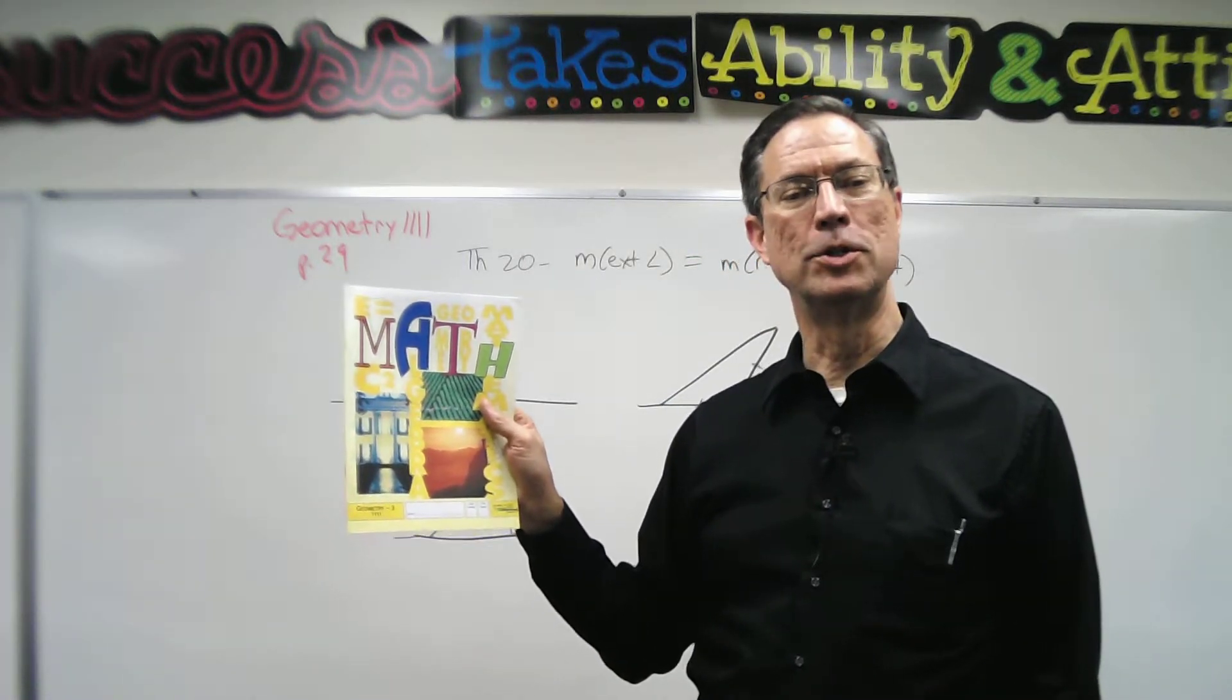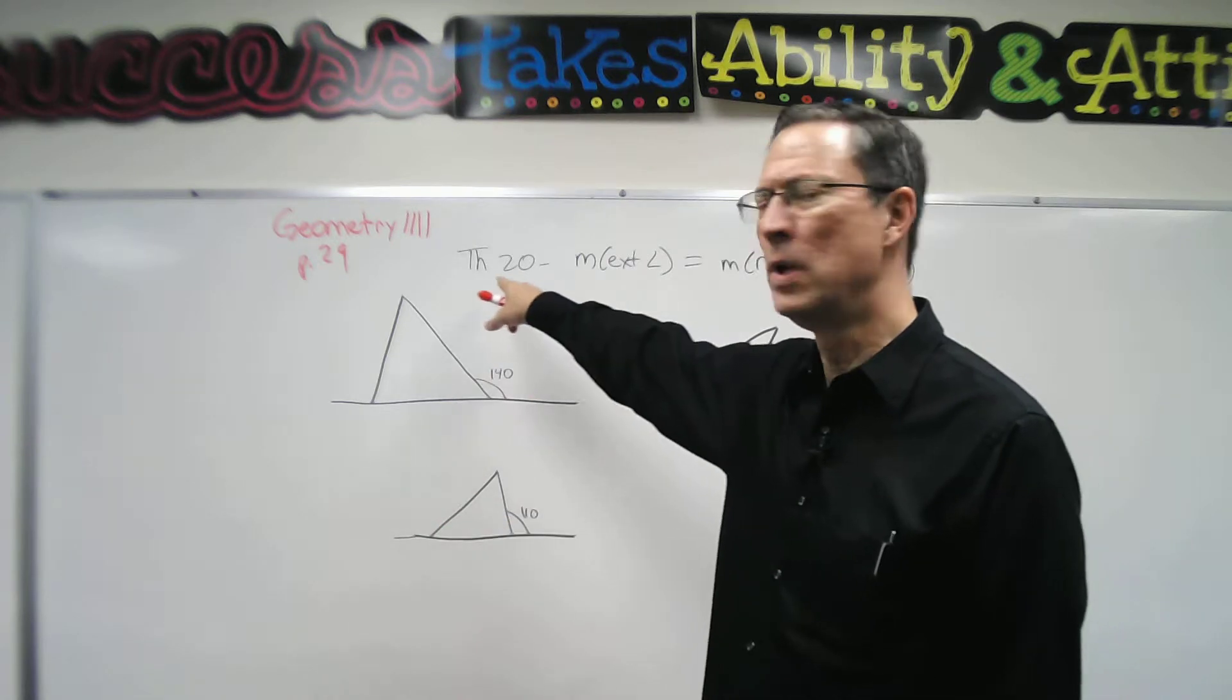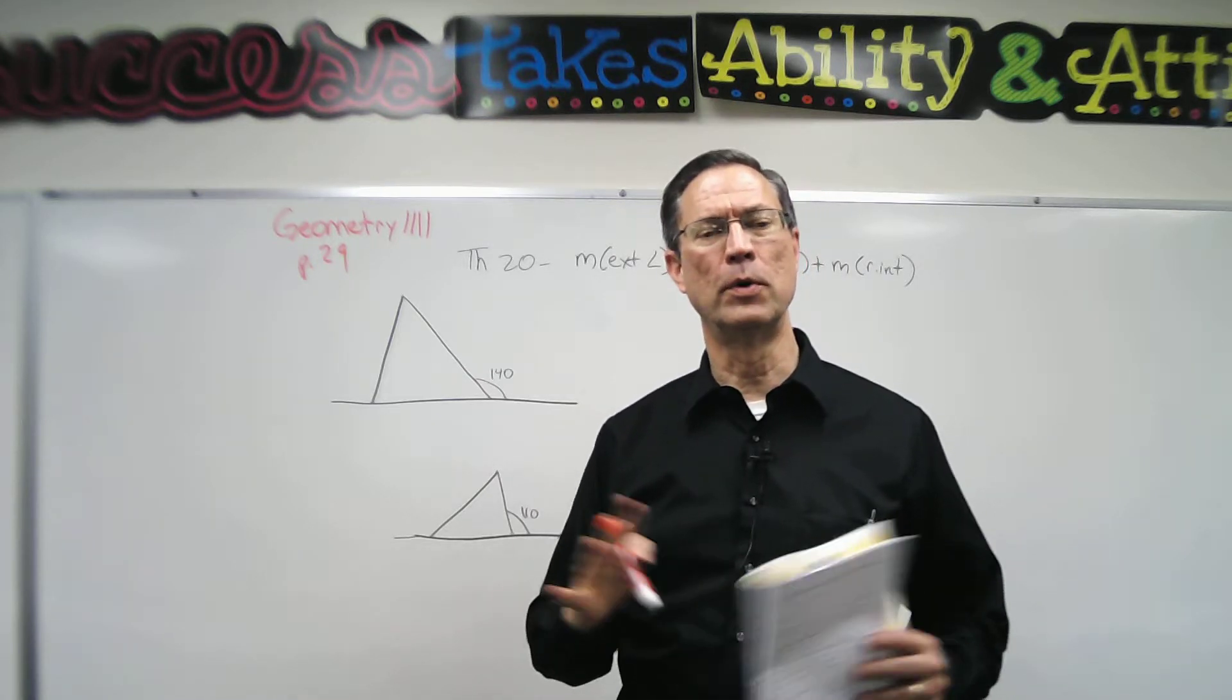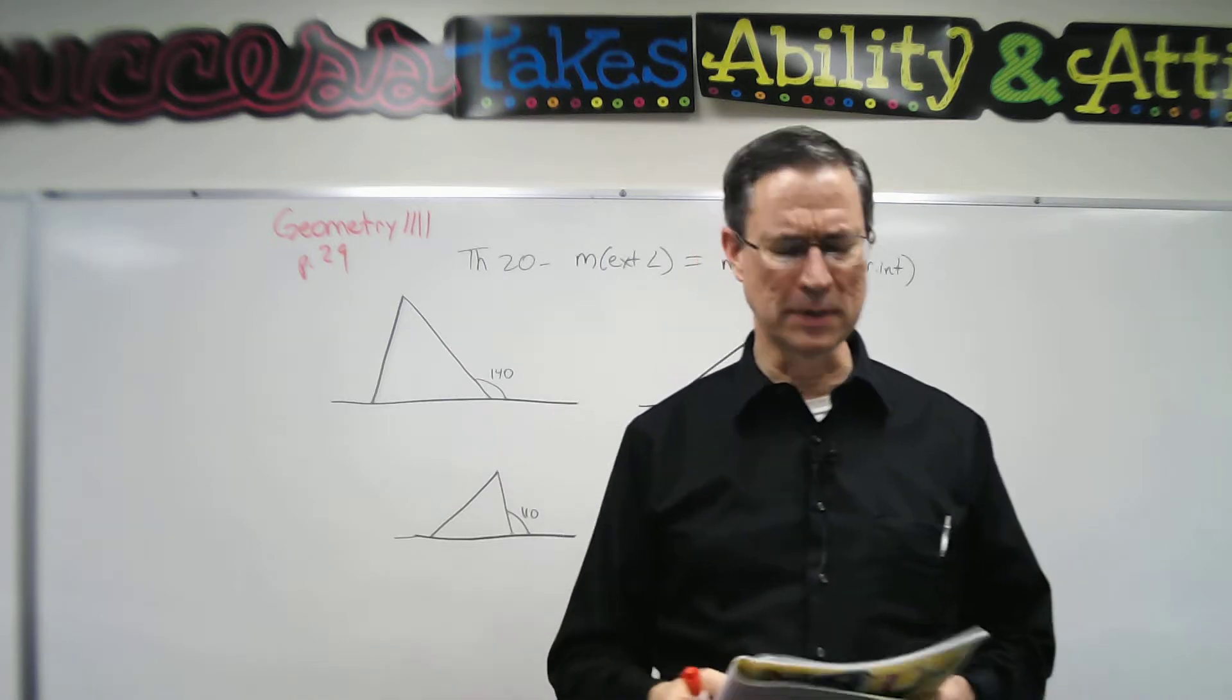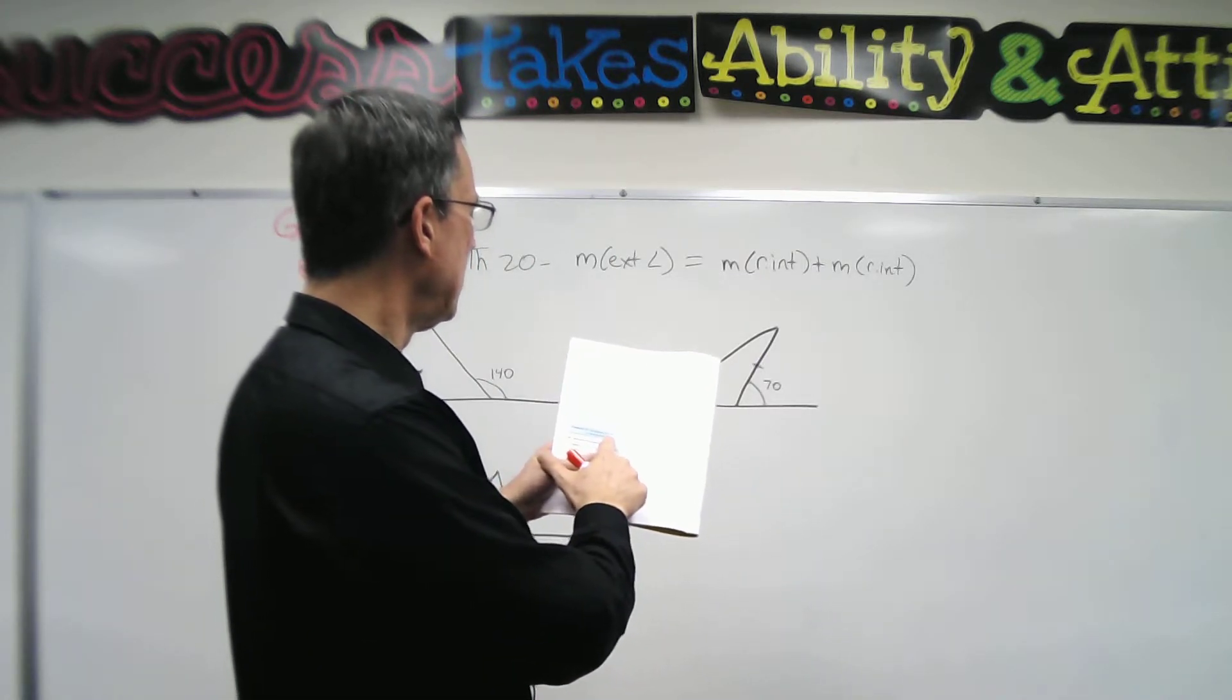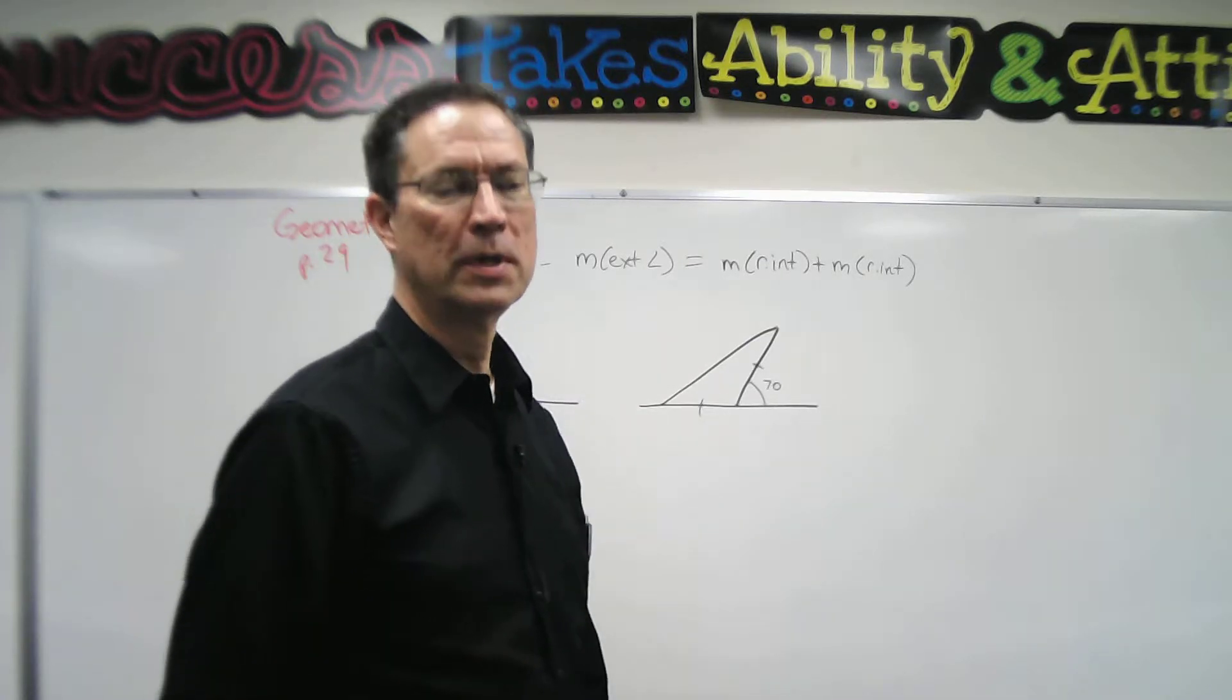This is a video about geometry 1111 third pace, and I want to talk a little bit about theorem 20, which is on page 29 of the pace. It's a little confusing because all of a sudden they're throwing a bunch of terminology at us that we've not heard of and don't give a lot of examples. So let's talk about this theorem on page 29. It says the measure of an exterior angle of a triangle is equal to the sum of the measures of the two remote angles.